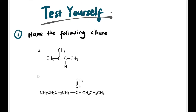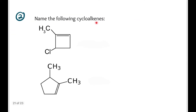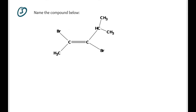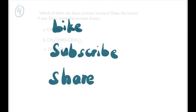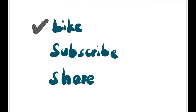Now, test yourself with this question. Number 1: name the following alkenes. Number 2: name the cycloalkenes. Number 3: name the — ini ada cis-trans yang nampak sudah kan, geometrical dia. And number 4: identify mana yang ada cis-trans and draw kalau ada, and name the isomers. Okay guys, don't forget to like, subscribe to the channel, and share the video if you find it helpful, and stay tuned for the next video. Bye-bye.